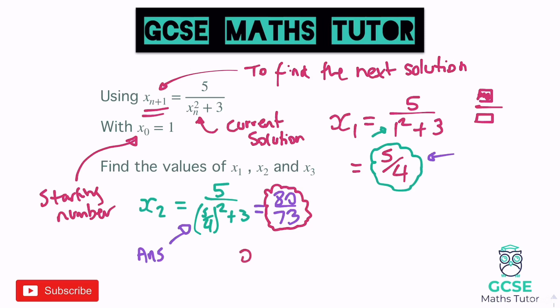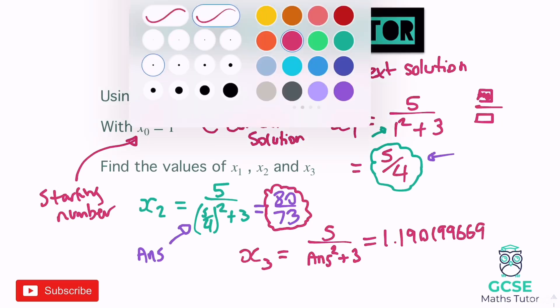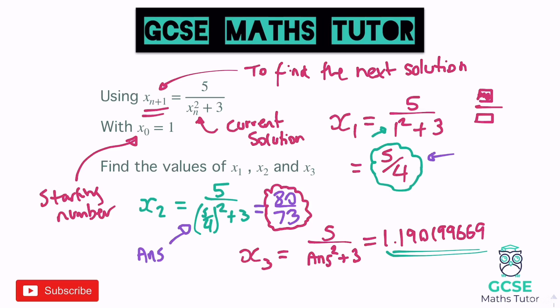Now we're going to find x3. That's the number we're going to use — 80 over 73 — in working out x3. On my calculator it says answer squared plus 3. I can just press equals again and it will reuse my current answer. Just make sure you don't clear anything off your screen. And it gives me a decimal answer this time: 1.190199669. And that is our final answer x3. These are estimates to the solutions of an equation — that's what we use iteration for. Write them down nice and clearly; definitely don't round them.